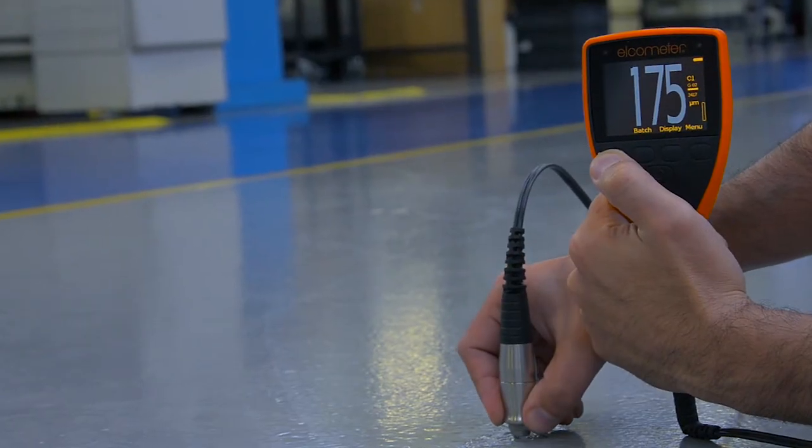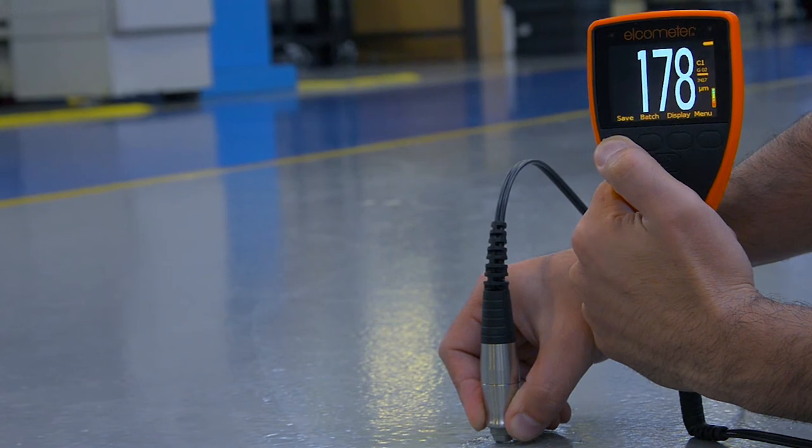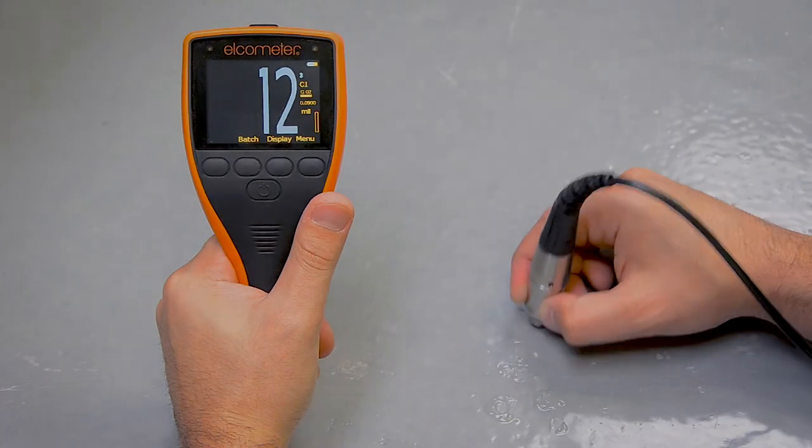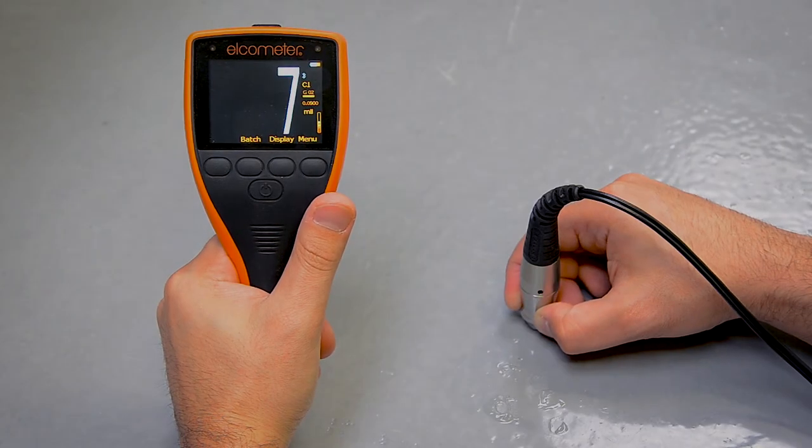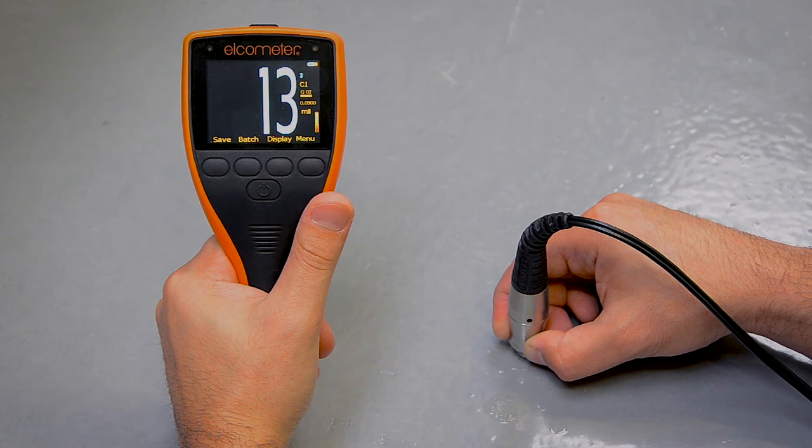As a result you may have to move the probe around to obtain a reading, ensuring you have an adequate amount of ultrasonic couplant on the surface wherever you're placing the probe. This is perfectly normal when using an ultrasonic gauge or when measuring coatings on concrete or other similar substrates.